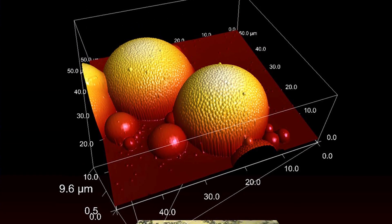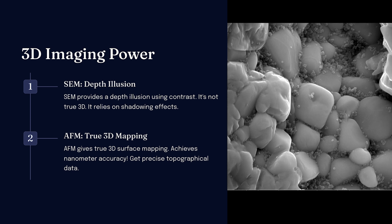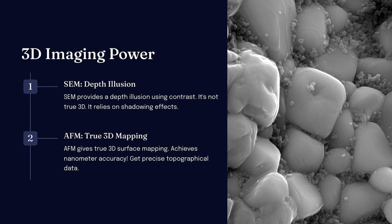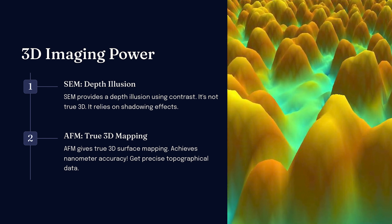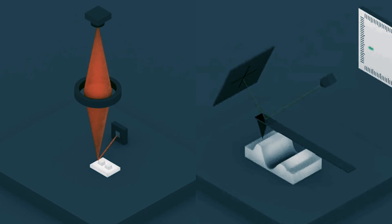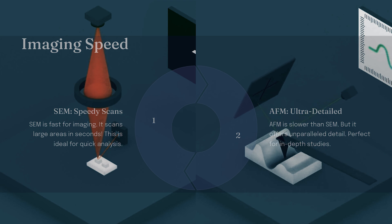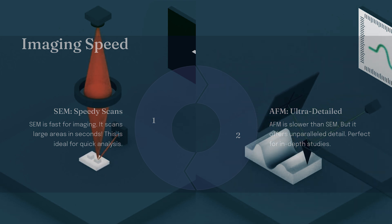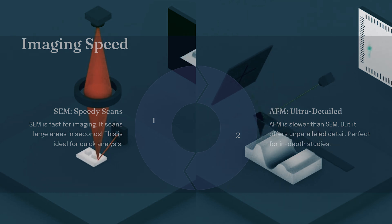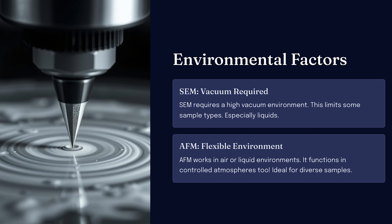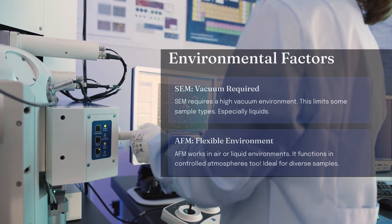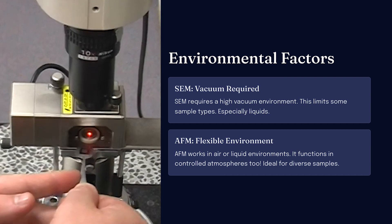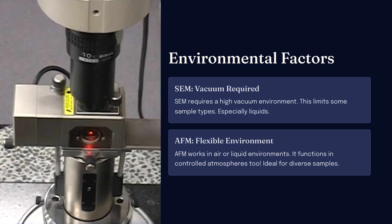What if you need true 3D imaging? SEM provides depth perception, but it's not a true 3D surface map — it relies on shadows and contrast to infer depth. AFM, however, directly maps the surface in three dimensions, creating high-accuracy 3D reconstructions at the nanometer scale. Need results fast? SEM is much faster than AFM and can scan large areas in seconds, making it perfect for high-throughput analysis. AFM, though incredibly detailed, is much slower since the probe must physically scan the surface point by point. SEM also requires a vacuum environment, which can be a major limitation for biological samples. But AFM can operate in air, liquid, or even specialized environments, making it a more flexible choice for sensitive samples.